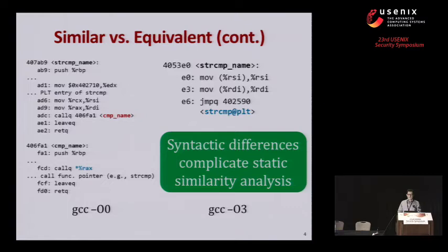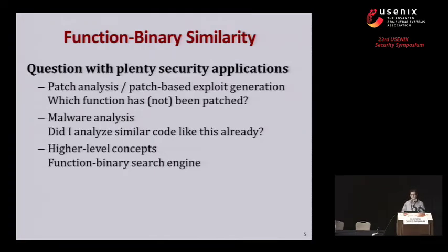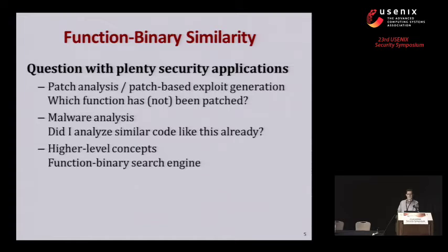This example shows that the syntactic differences introduced by different compilers or optimization settings complicate state-of-the-art similarity analyses quite a bit. The relevance in a security setting is clear: analyzing patches or performing patch-based exploit generation involves exactly the question of which functions have been patched across two versions of a binary. Similarly, in malware analysis, if expensive manual analysis is required, identifying similar functionality already seen can save significant time. Furthermore, as we'll see later, a function binary similarity component enables higher-level things like implementing a binary search engine.